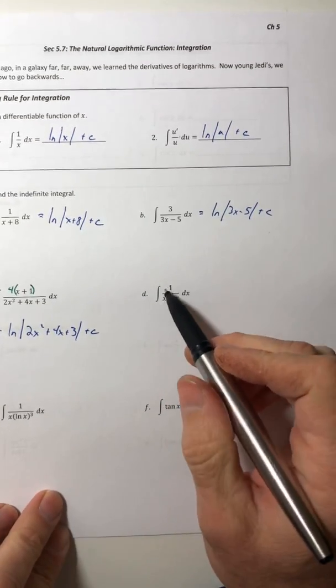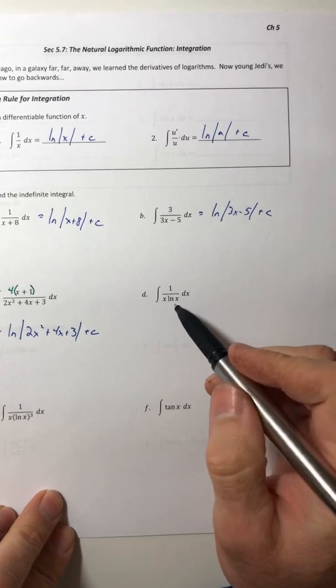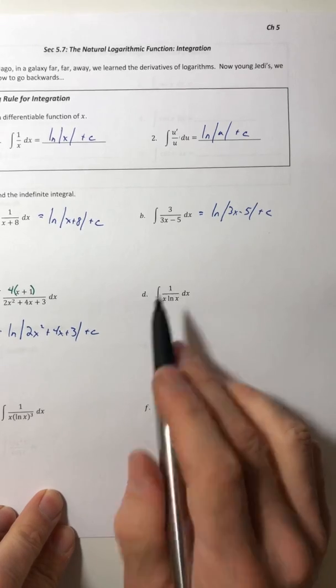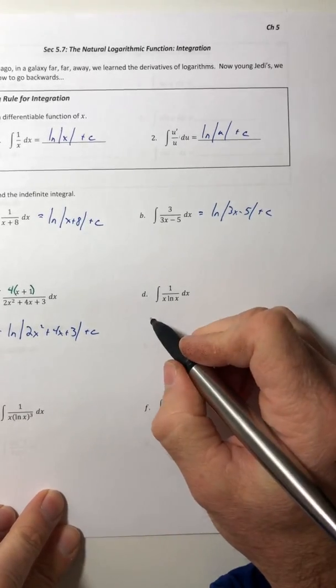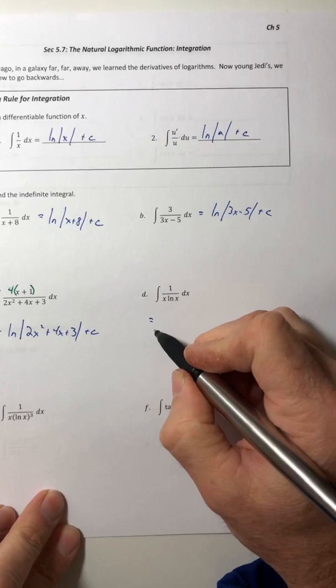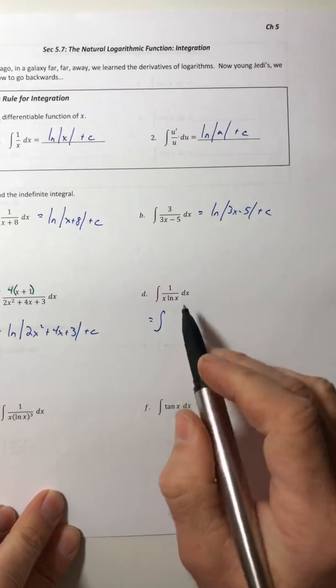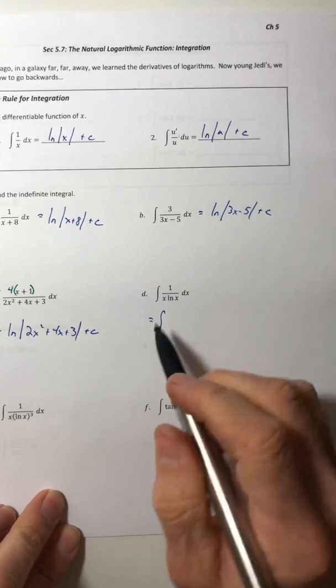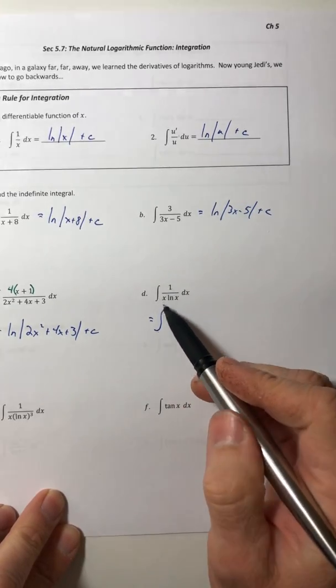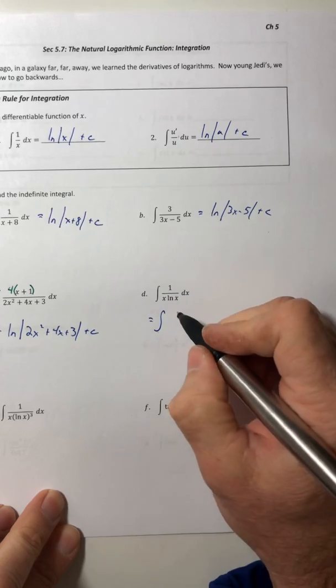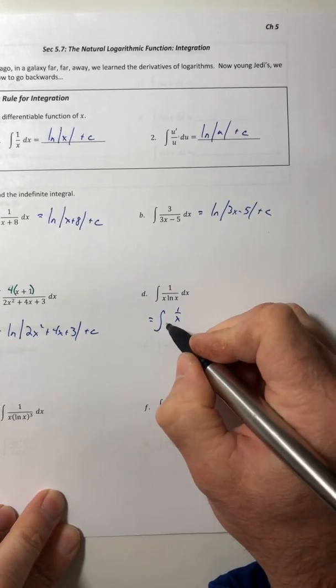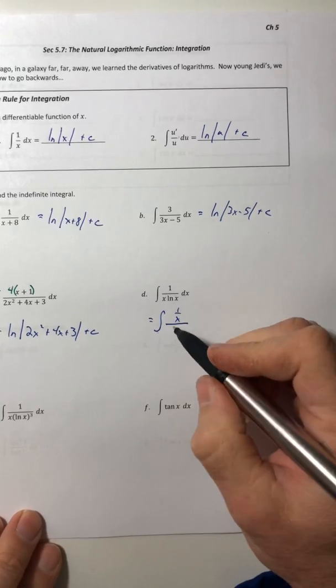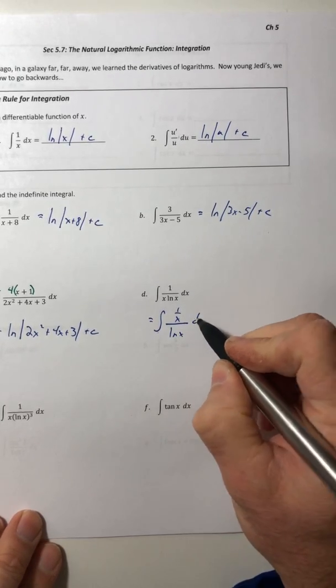Okay. Moving on to part d. So if I did the derivative of this denominator, that would not be 1. So that's not even close. But I can rewrite it. Because what is the derivative of ln of x? Well, that's 1 over x. So if I rewrite this a little bit, I can unsimplify it and change it into 1 over x ln of x.